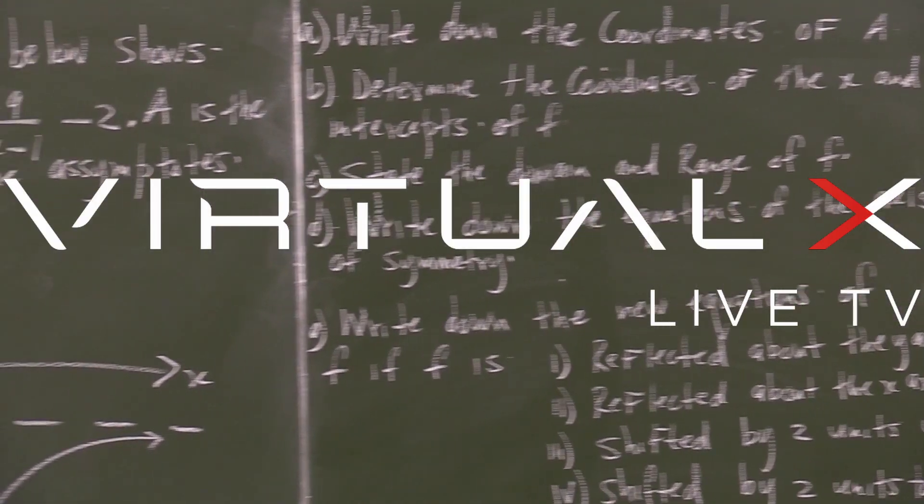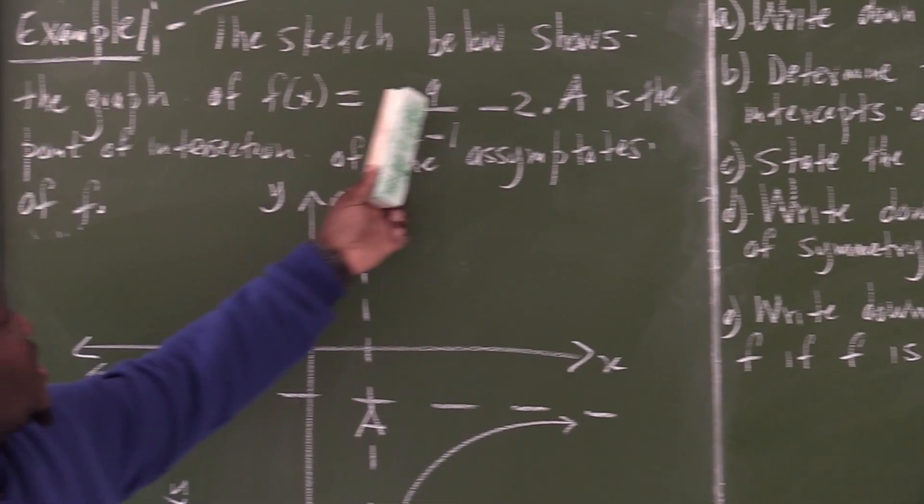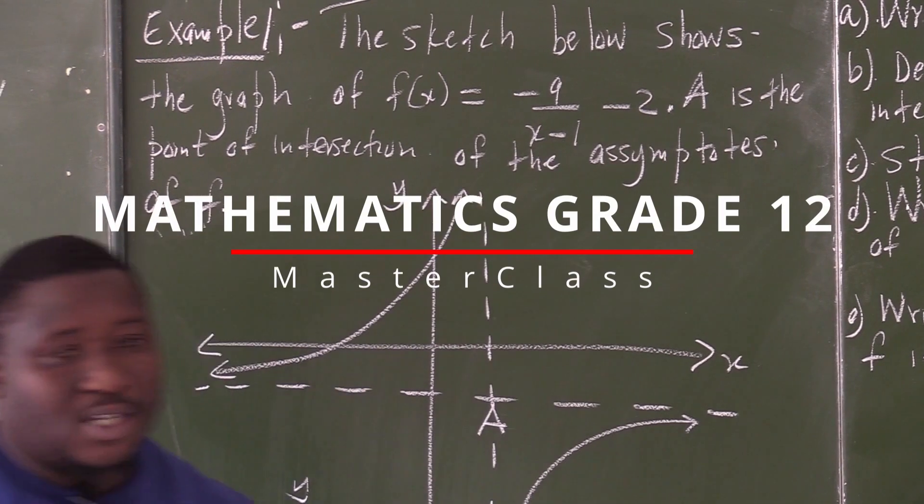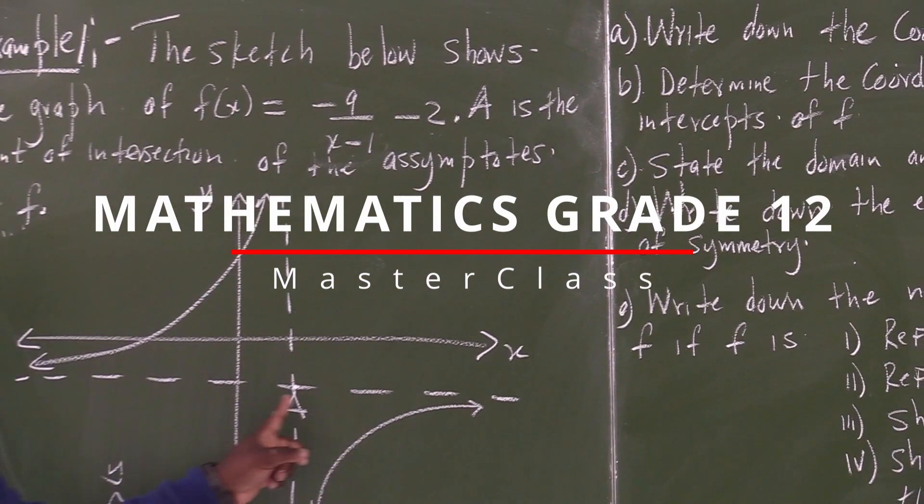So here, we are given the sketch graph of f of x, which is negative 9 over x minus 1 minus 2. Now, how are we going to find the coordinates of A?